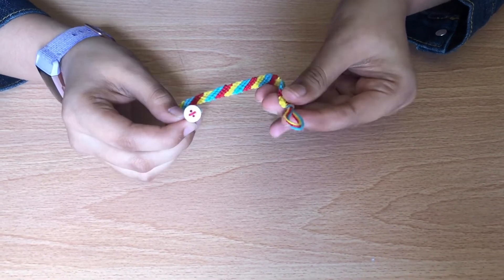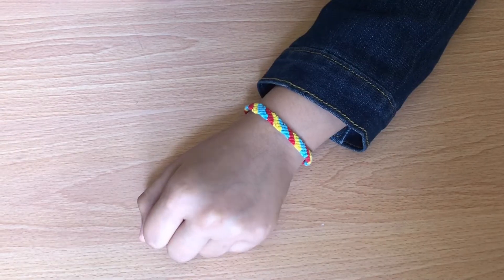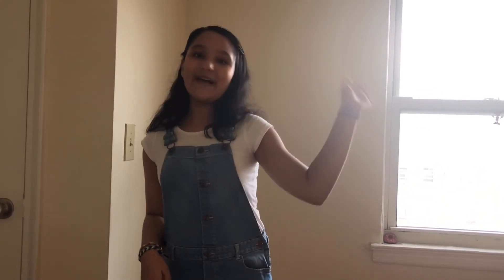To tie the bracelet on take the loop side and put it in through the button. Here it is, thank you all for watching my video. Don't forget to hit the like button, share and subscribe. Also comment down below if you like the first bracelet or the second bracelet, excited to see your comments. See you all next time bye.